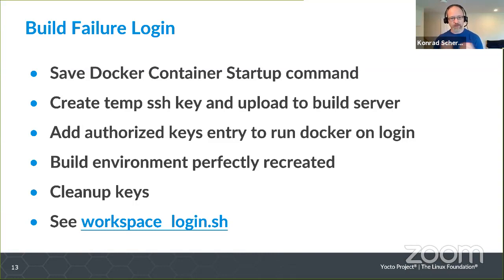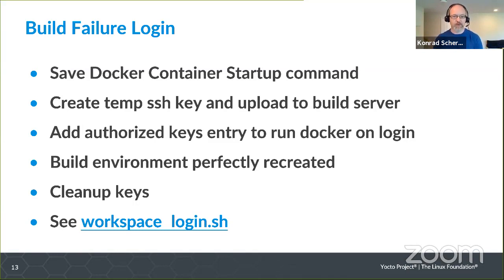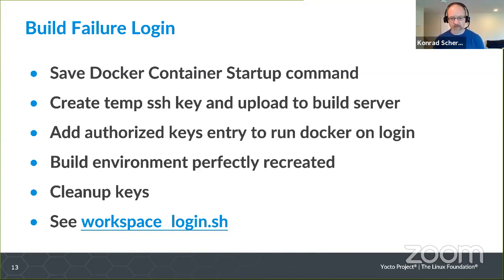There's a wonderful feature in SSH authorized keys where you can specify the command to run when that key logs in — in fact, Gitolite uses this for its authentication. Here, as soon as everything is set up, the script automatically SSHs in, runs the Docker run command with all the proper parameters, and drops the user directly into the build space — the exact workspace where the failure happened, at the exact state it happened. This has been really useful for allowing our developers to track down those nasty failures that are really hard to reproduce.